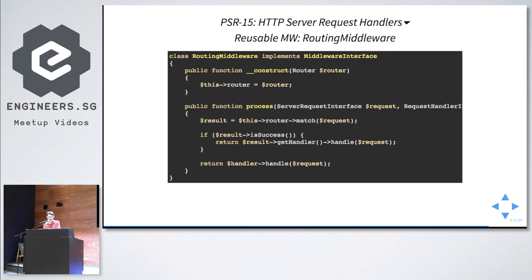The routing middleware has the router injected via the constructor. In the process() method it passes the request to the router, checks for a match — if matched, gets a RequestHandler from the router's result via getHandler() which returns a PSR15 RequestHandler. If no route is matched, it passes to the fallback request handler.